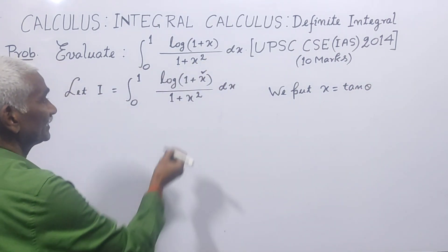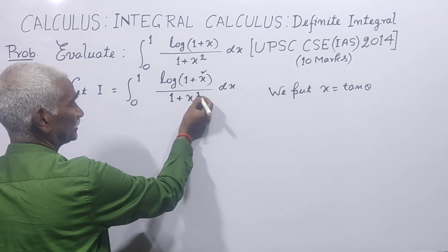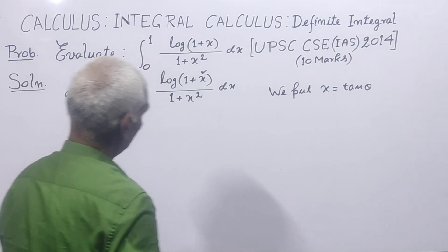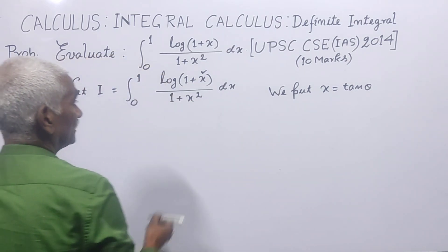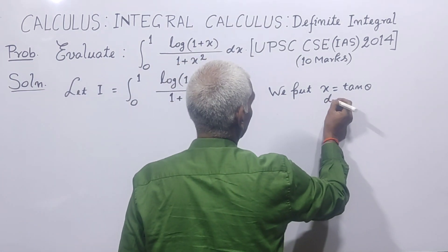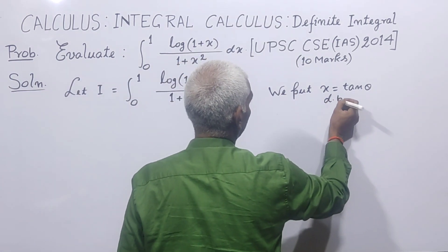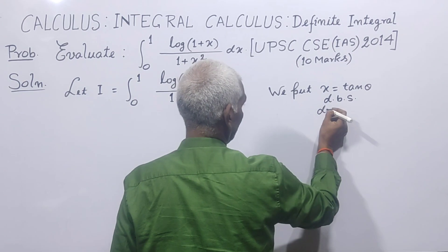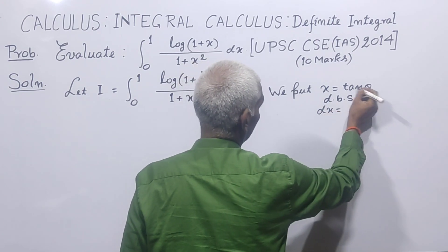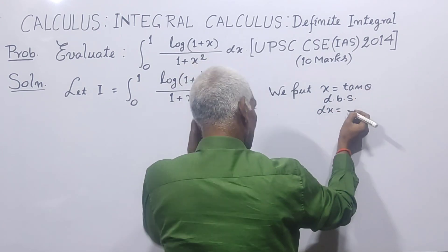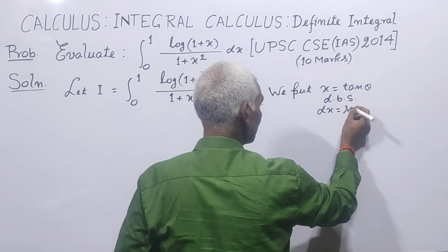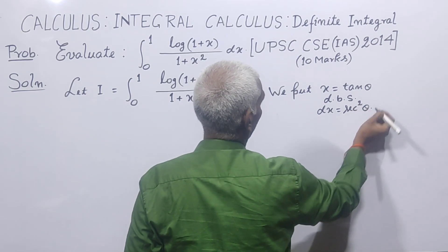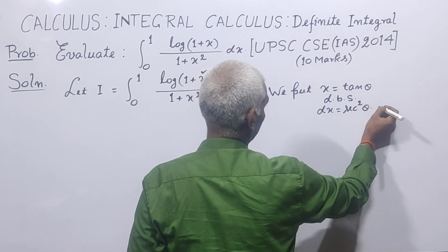We place x = tan θ because when we substitute tan θ, the expression 1 + tan²θ becomes sec²θ. Differentiating both sides, the differential dx becomes sec²θ dθ.